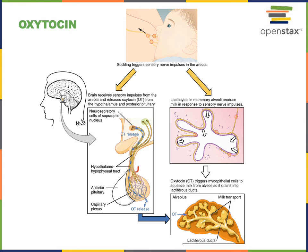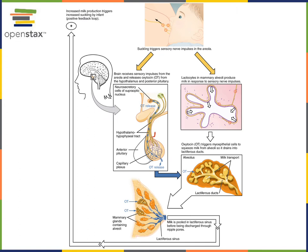Oxytocin is also involved in a positive feedback loop that stimulates the release of milk during suckling. When an infant suckles, it stimulates sensory receptors in the areola and nipple that relay information to the hypothalamus, stimulating the neurosecretory cells that secrete oxytocin from the posterior pituitary gland. Oxytocin then binds to receptors on myoepithelial cells in the mammary gland, stimulating contraction that releases milk as milk pools in lactiferous ducts and then in the lactiferous sinus, where it will be secreted out of the mammary gland.